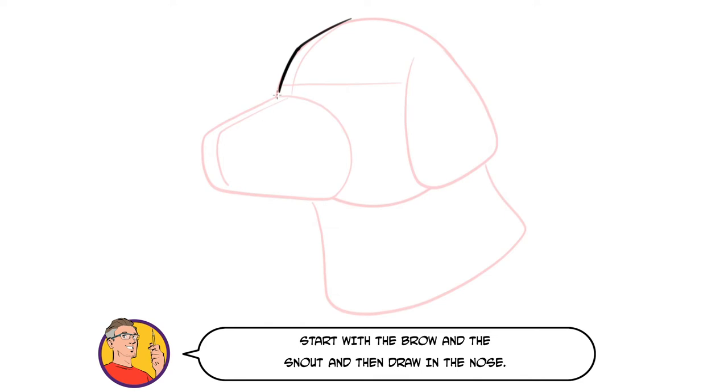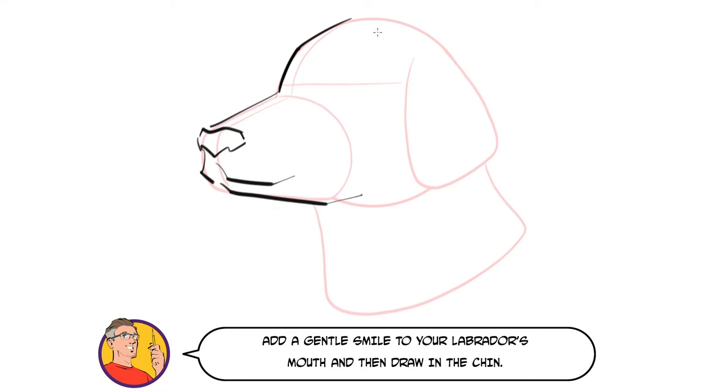Start with the brow and the snout and then draw in the nose. See how I'm not just tracing over my guides with this line just beneath the nose. Add a gentle smile to your Labrador's mouth and then draw in the chin.